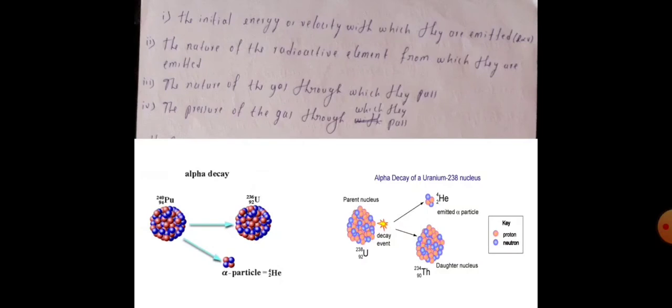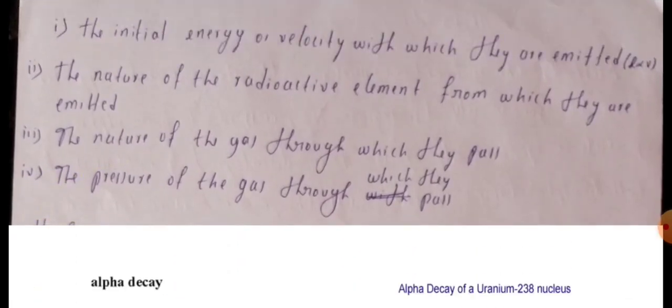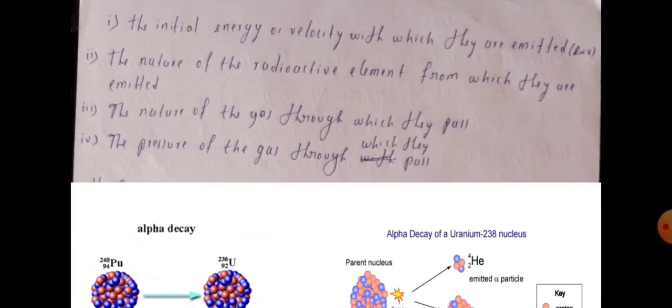The range of alpha particles depends on four points. The first one is the initial energy or velocity with which they are emitted. The second one is the nature of the radioactive element from which they are emitted. The third one is the nature of the gas through which they pass. And the last one is the pressure of the gas through which they pass.